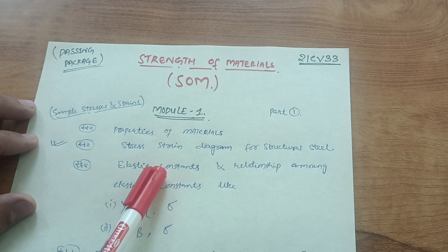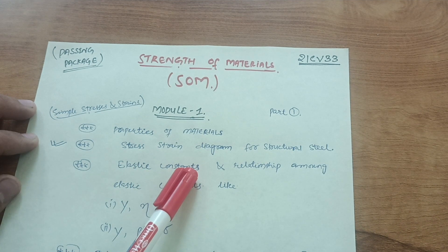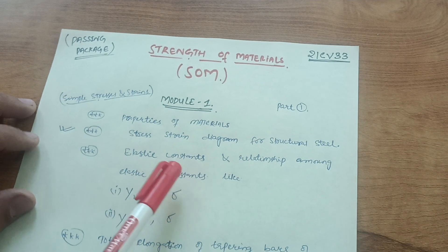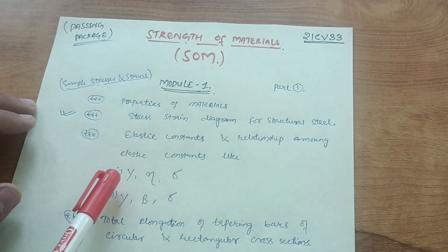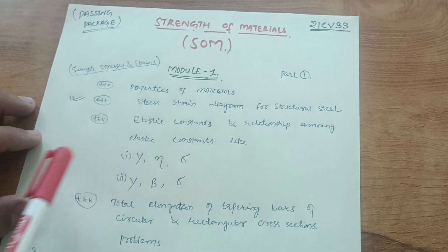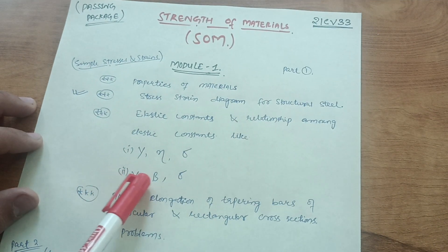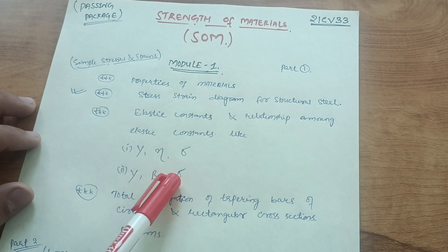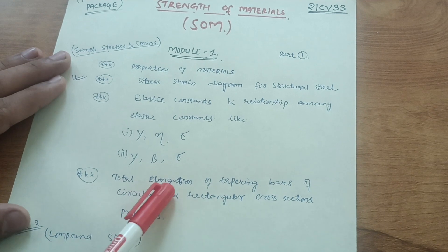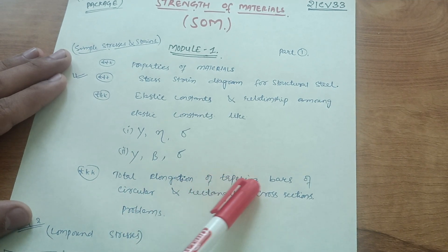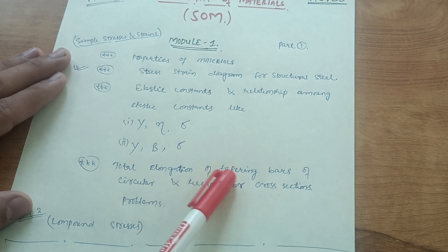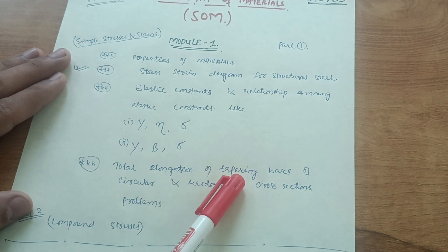Cover elastic constants like Young's Modulus, Bulk Modulus, and Rigidity Modulus, and also the relationships among elastic constants — such as the relationship between Young's Modulus, Rigidity Modulus and Poisson's Ratio, and Young's Modulus, Bulk Modulus and Poisson's Ratio. Then cover total elongation and tapering bars of circular and rectangular cross sections — these problems will come up in the examination.